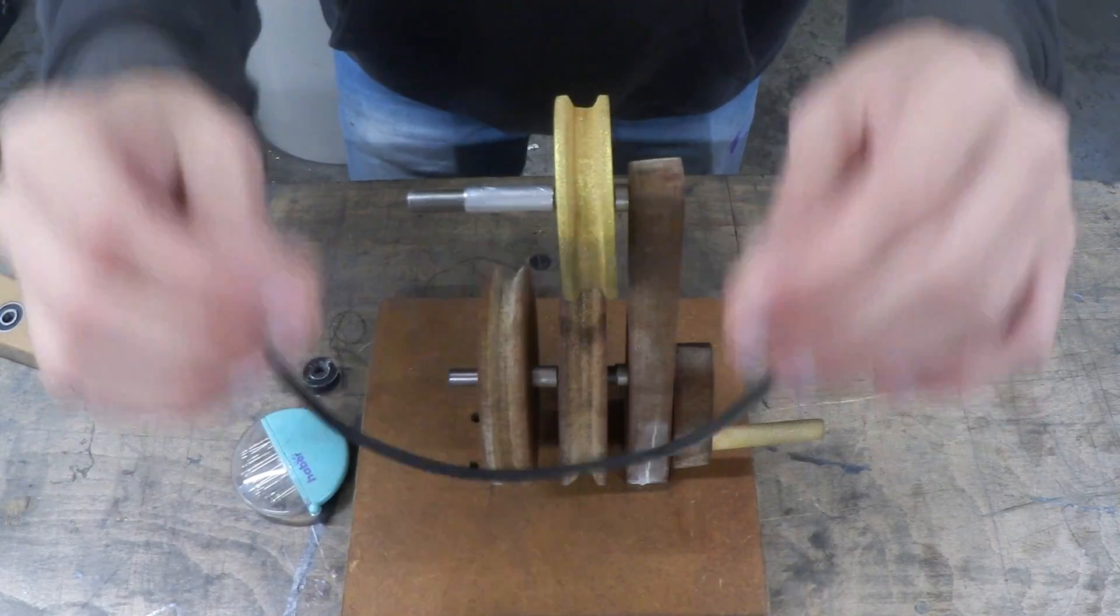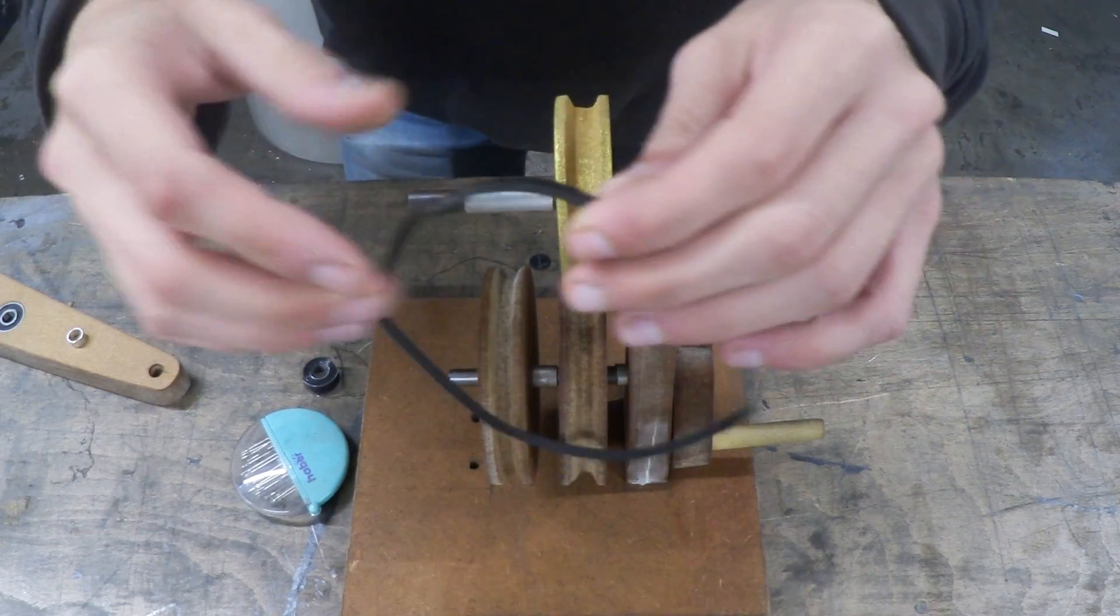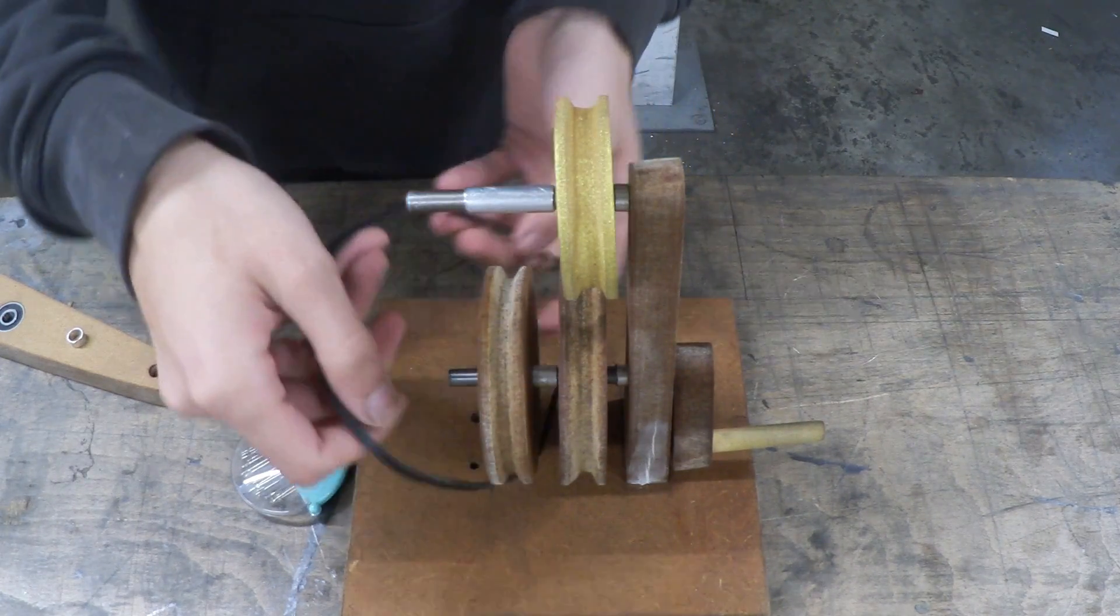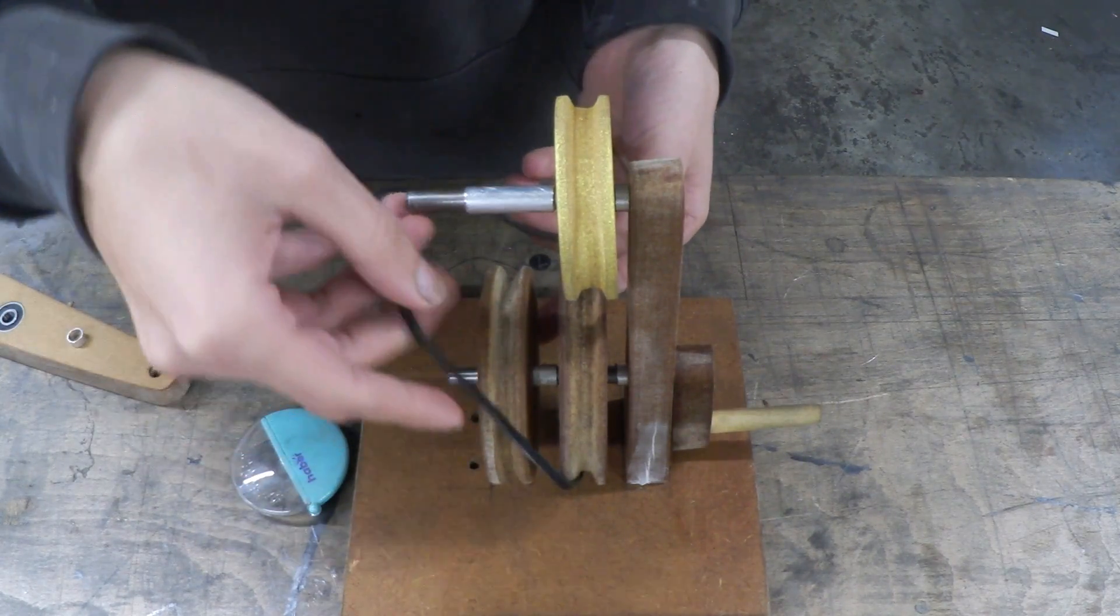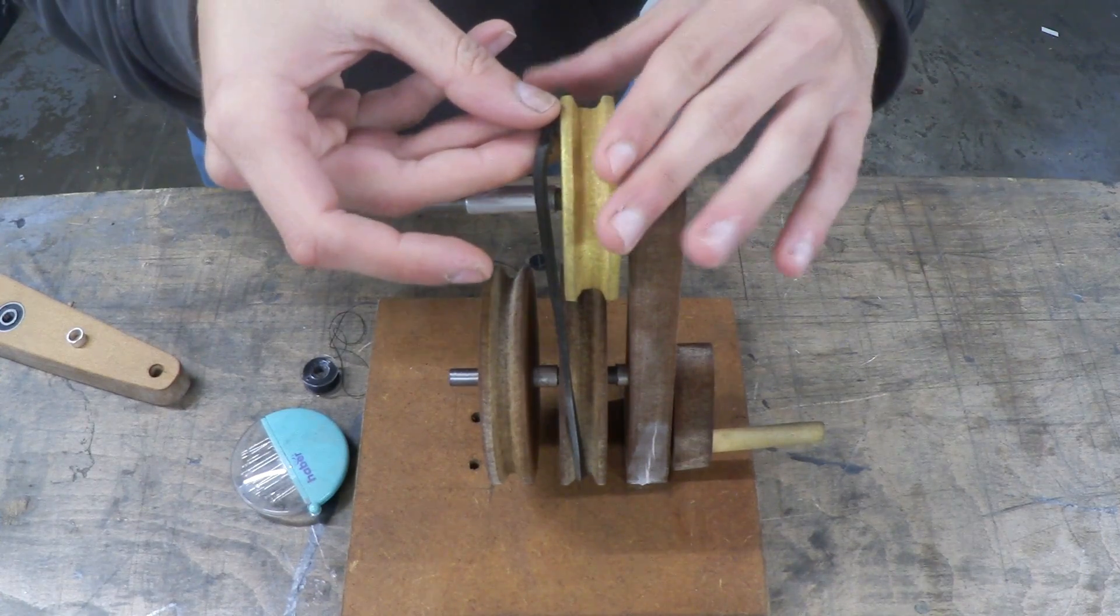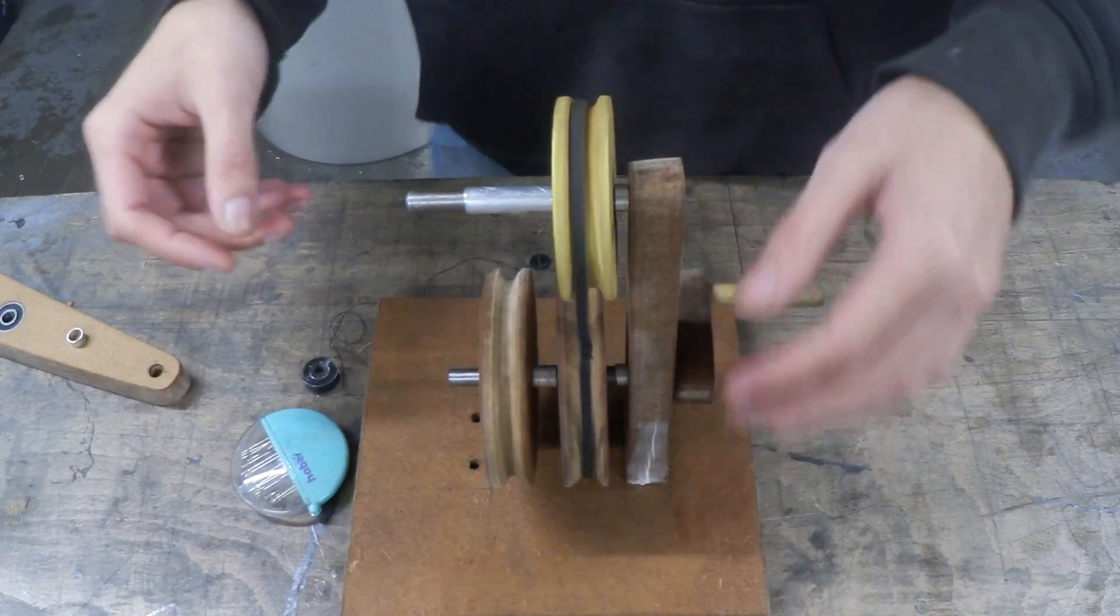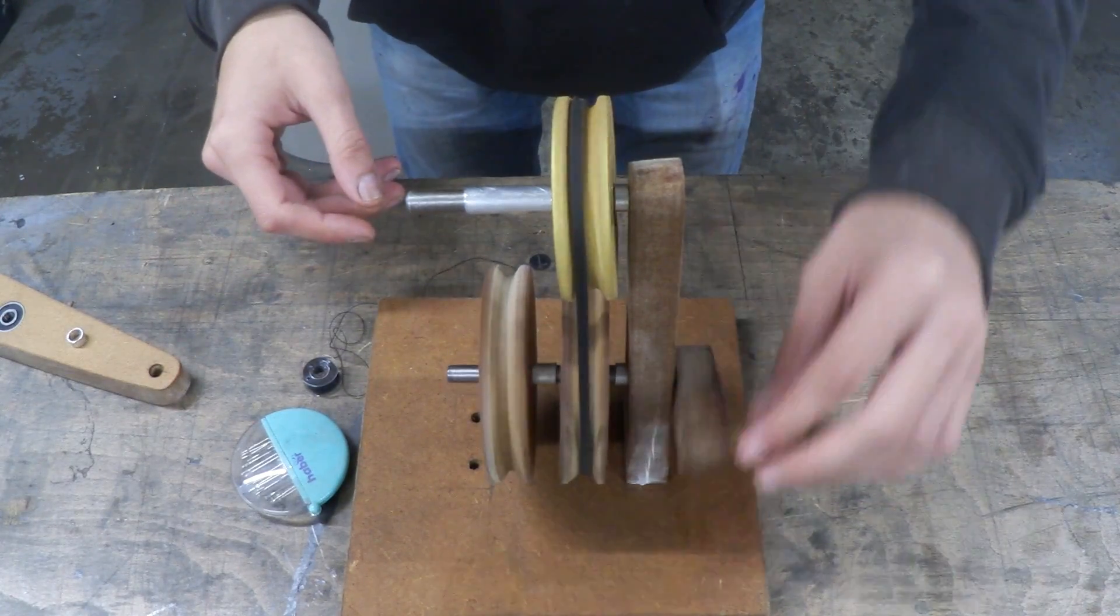So that's the belt material completed. And there's a really easy way to attach these to the pulleys, which I'm going to show you. All you want to do is put it around the bottom notch, like so. Bring it around the top. Get a little bit of the belt material on the top pulley. Hold it with your thumb and then just rotate it around. And there you go. It's on.